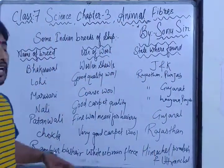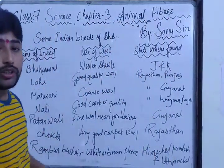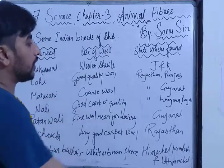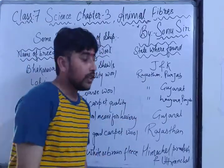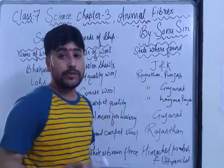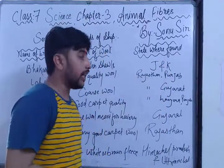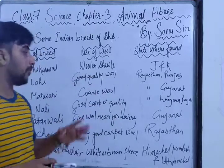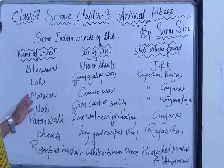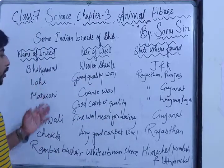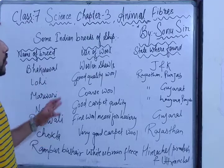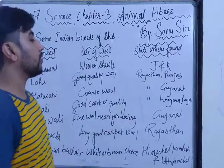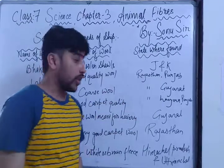If I talk about Bhakarwal — it is a breed of sheep used especially for woolen shawls and it is found in Jammu and Kashmir. The second breed is Lohi — it gives good quality wool and is used for each and every purpose. It is found in Rajasthan and Punjab.